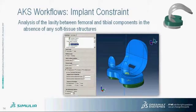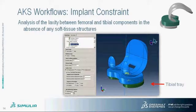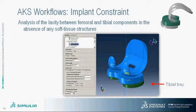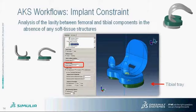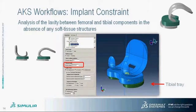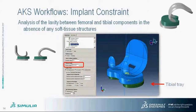The second workflow is the Implant Constraint Workflow — the analysis of laxity between femoral and tibial components in the absence of soft tissue structures. Compared to the previous workflow, one additional component included is the tibial tray, provided by Abacus Knee Simulator for output purposes. The flexion angle here also indicates where laxity tests will be performed — for example, at zero and 120 degrees. A smaller increment means more laxity tests performed at each interval.